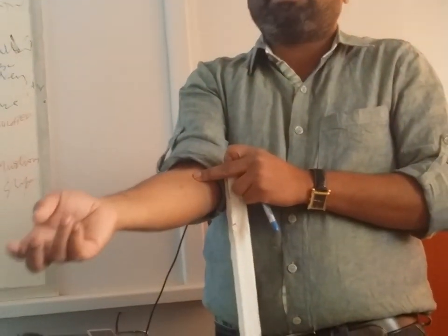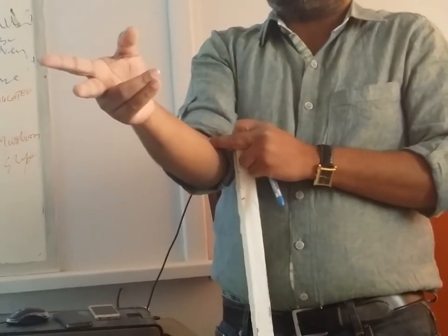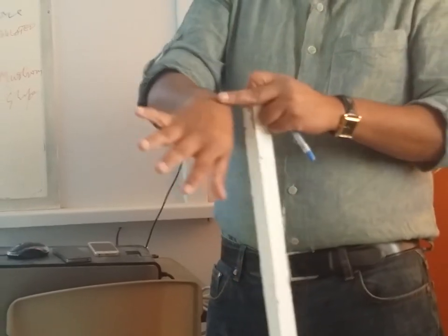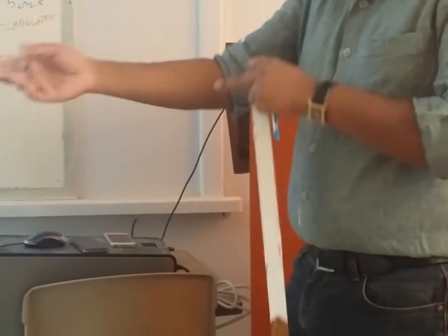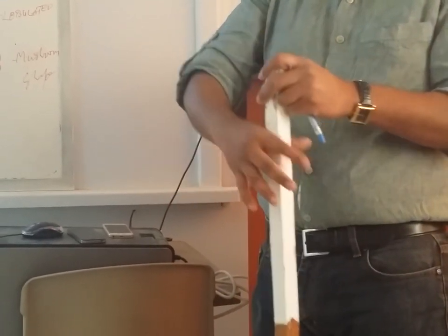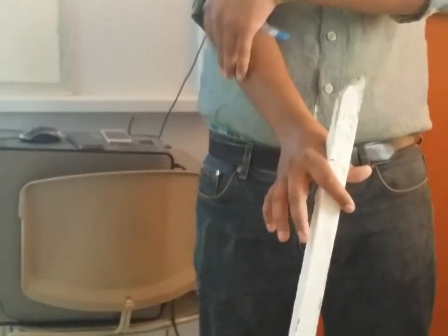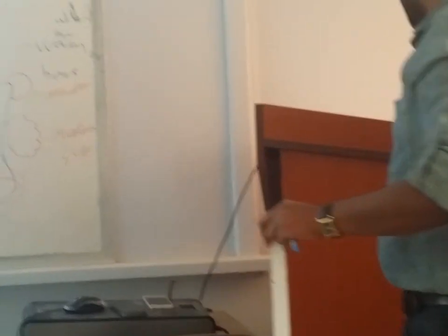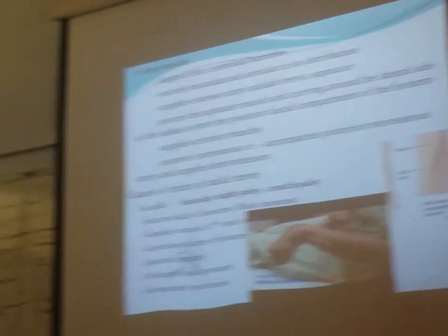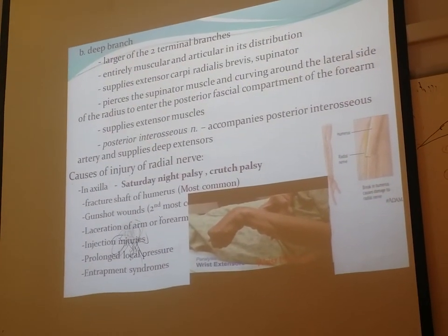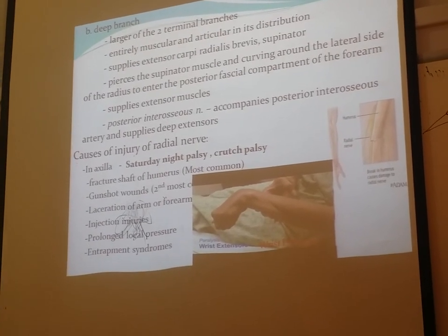Radial nerve: after the lateral epicondyle it enters the forearm and immediately divides into two. The superficial branch supplies all the skin of the back of the forearm and three and a half fingers on the dorsal side. The deep branch — the posterior interosseous nerve — supplies all the extensor muscles. You have to revise this today itself. If you postpone it, you will forget 50%. Go back home and revise this lecture on the same day.